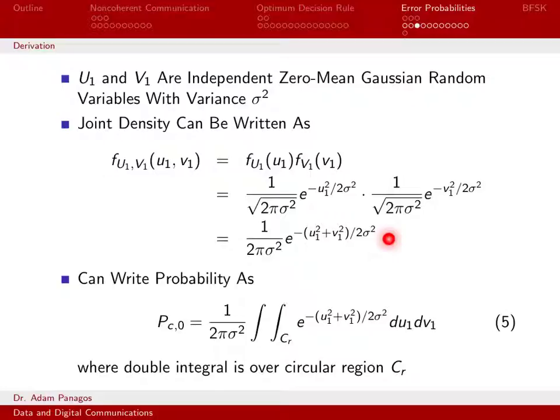Since we know these are zero mean with variance σ², we can write down the product of these two Gaussian PDFs. We've taken 1 over square root factors and written it as one factor. Instead of the product of two exponentials, we have one exponential with their exponents added together. Now we can write the probability of being correct as the integral of this joint PDF over the circular region Cr.